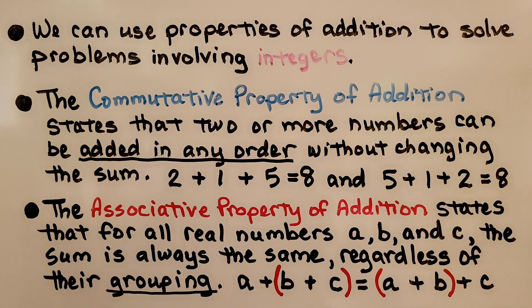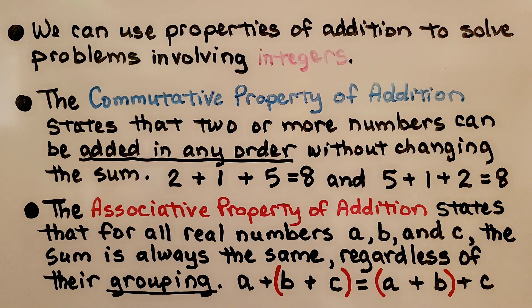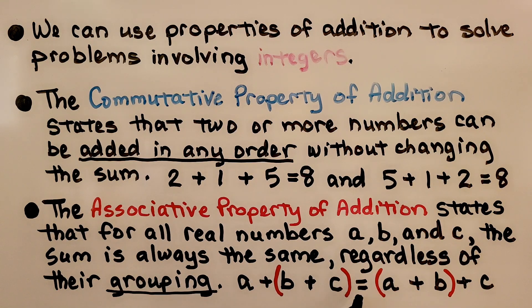The associative property of addition is the grouping property. Try to remember that it is the grouping property. It states that for all real numbers A, B, and C, the sum is always the same regardless of their grouping. We can group B and C together and add them, and we will get the same sum as if we grouped A and B together and then added C.